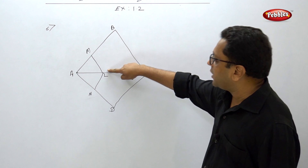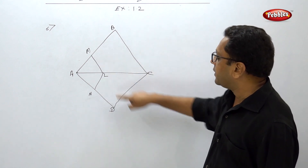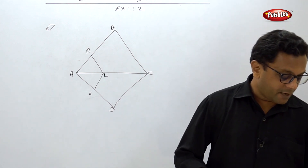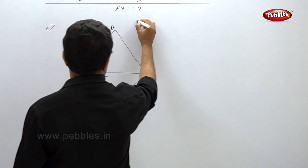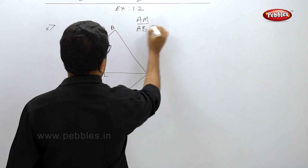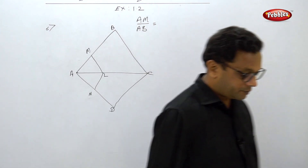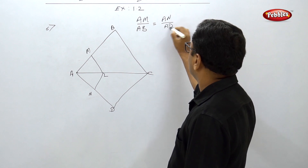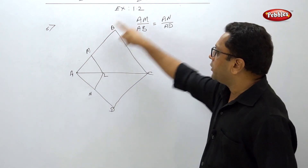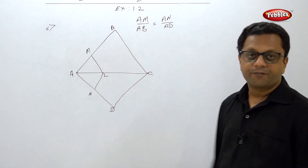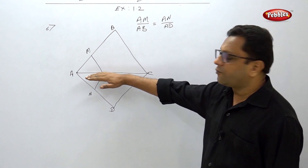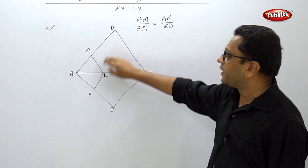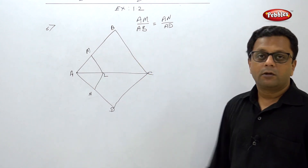In Example 6, it is stated that ML is parallel to BC and NL is parallel to DC. We need to prove that AM/AB equals AN/AD. First, consider the upper triangle where ML is parallel to BC.